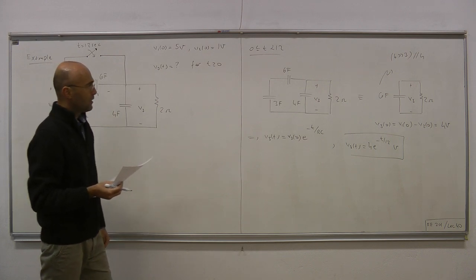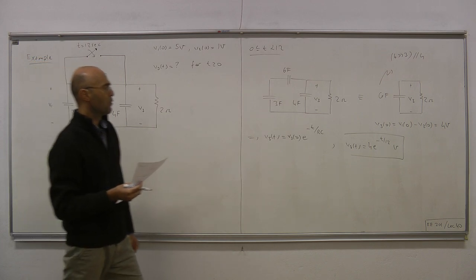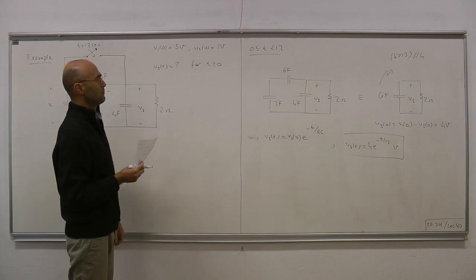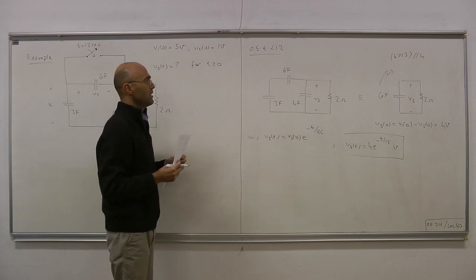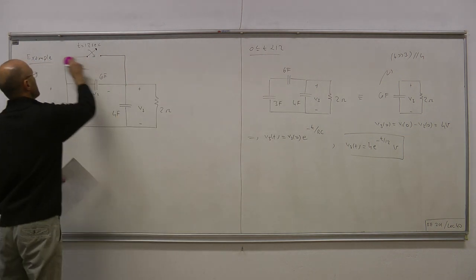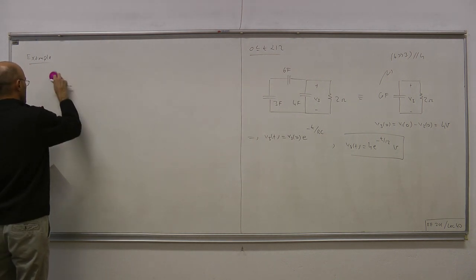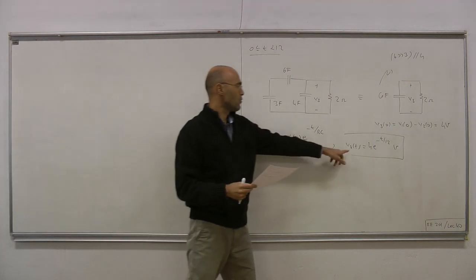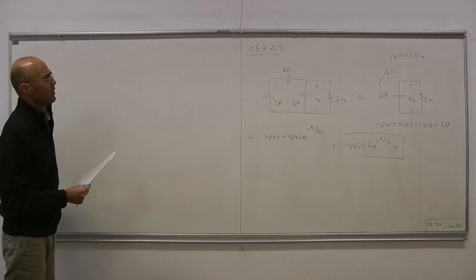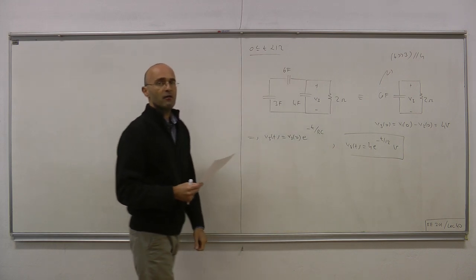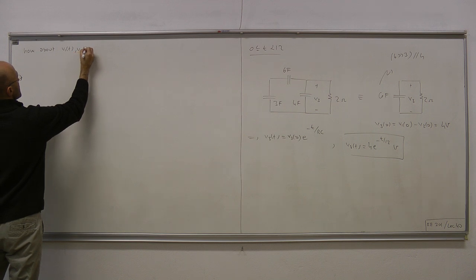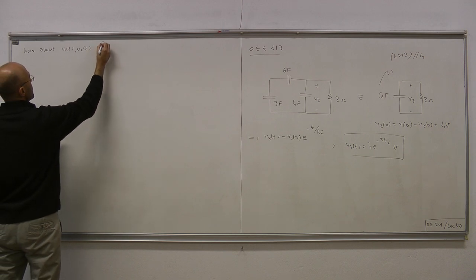The next thing we will do is figure out the initial condition of the third capacitor voltage after the switch is shut. For that we require the voltages of V1 just before the switch shuts at t equals 12 minus. Even though we ask for V3 only, we also have to figure out V1 for this interval, because we will need that information to determine the capacitor voltage V3 after the switch shuts. Let us talk about what happens to V1(t) and V2(t) during this interval.